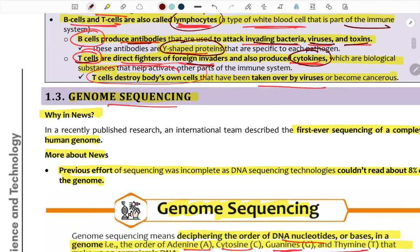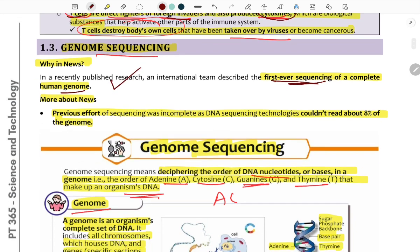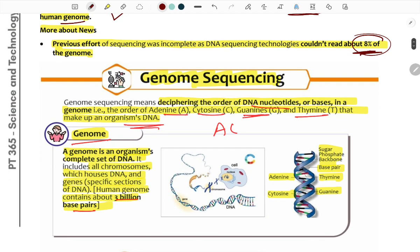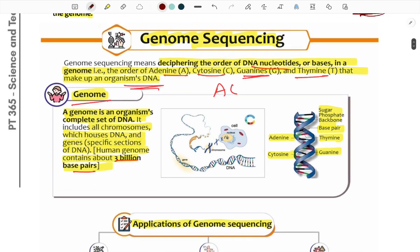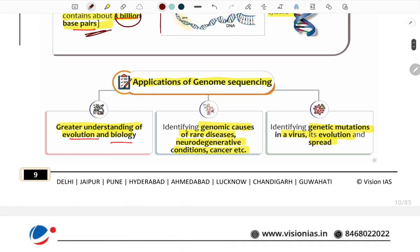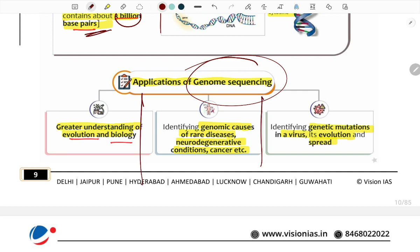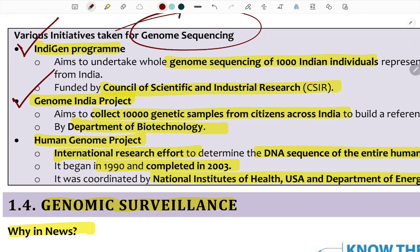Next: Genome Sequencing. Scientists completed the first ever sequencing of a complete human genome — over 90 percent complete. Genome sequencing basically determines the DNA order — the sequence of bases: adenine (A), cytosine (C), guanine (G), thymine (T). The genome is the complete set of DNA in an organism, housed in chromosomes. The human genome has nearly 3 billion base pairs. Genome sequencing helps in understanding human evolution, biology, identifying rare diseases, neurodegenerative conditions, cancer, and genetic mutations in virus evolution.